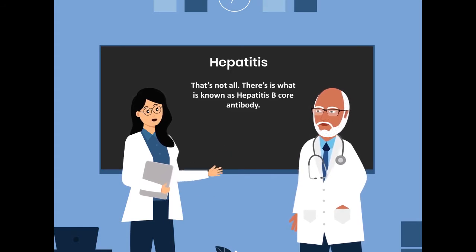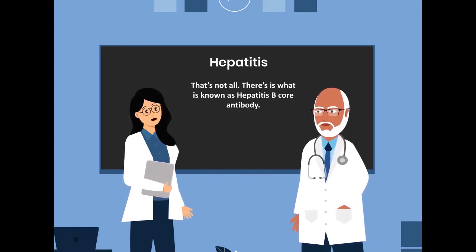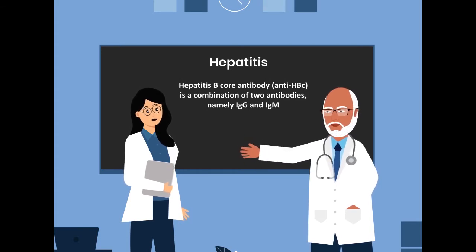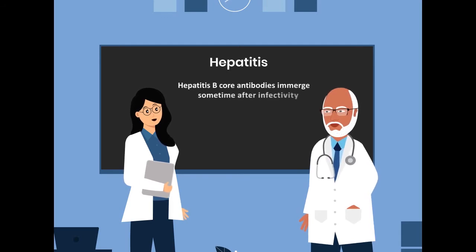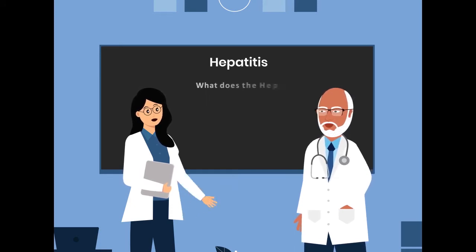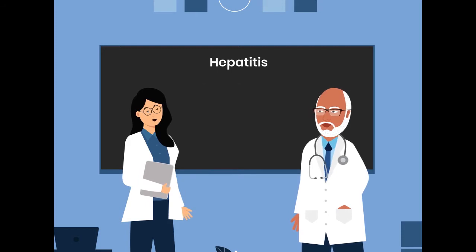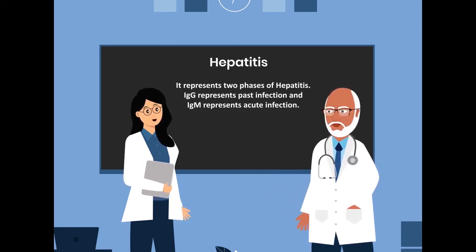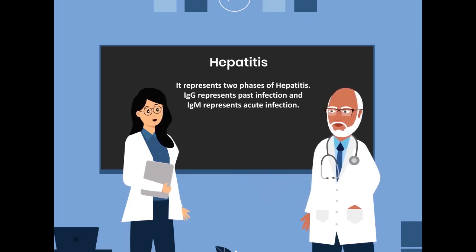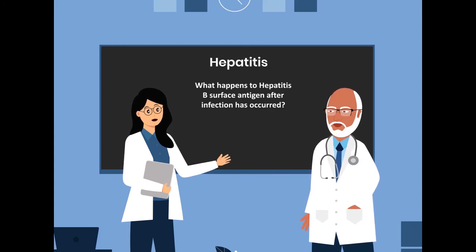There is what is known as Hepatitis B core antibody. Hepatitis B core antibody is a combination of two antibodies, namely IgG and IgM. Hepatitis B core antibodies emerge sometime after infectivity. What does the hepatitis core antibody represent? It represents two phases of Hepatitis. IgG represents past infection and IgM represents acute infection.